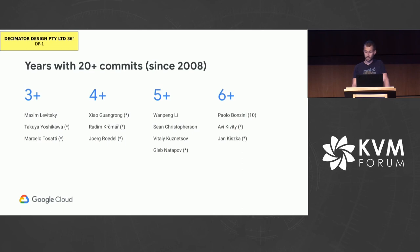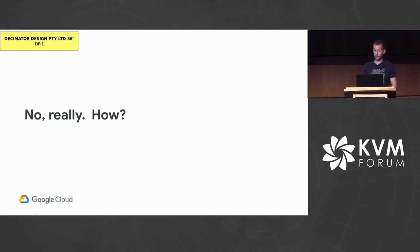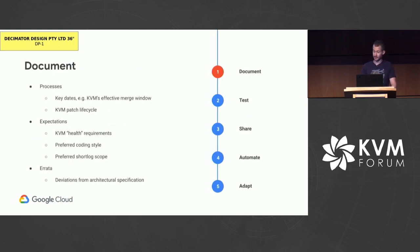Unless we're extremely diligent in documenting KVM's quirks and errata, knowledge of KVM's good-enough shortcuts will eventually be lost and will have to be relearned by the next generation. Without solid documentation, the long-term cost of not breaking KVM is non-trivial, as it's not always obvious why KVM behaves a certain way. Anecdotally, I've spent far too many hours doing git archaeology to understand why, even if it only takes a small amount of time to understand what KVM does. So — document expectations and processes, and if we don't have them, define them.